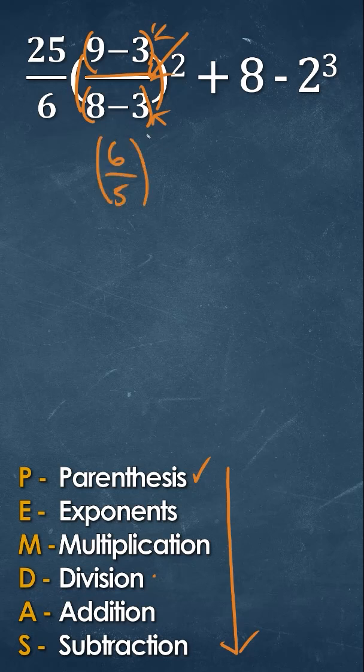We have parentheses still and we have a square so now we're going to take a look at exponents. We have to convert this exponent here and then put it down here so that's going to give us six squared over five squared which is going to be 36 over 25.